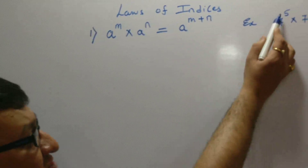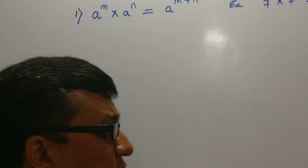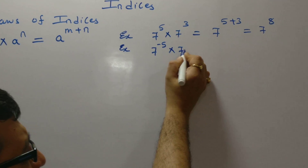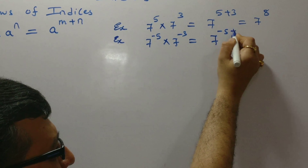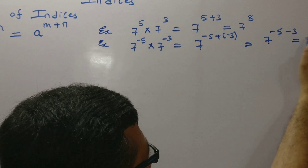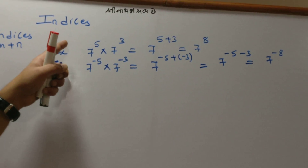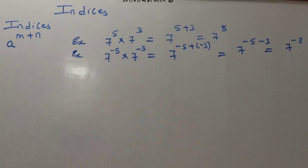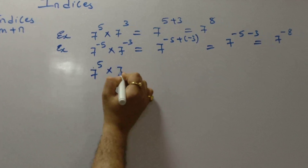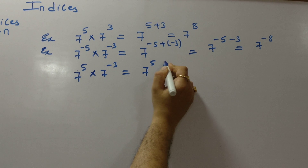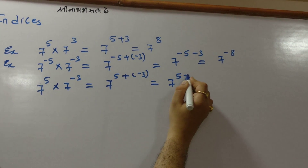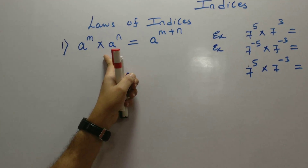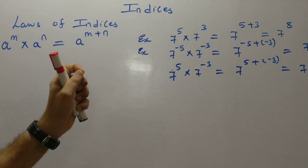The question arises: should we always have positive powers? No, not necessary. The powers can be negative as well. Example 2: 7 raised to minus 5 into 7 raised to minus 3. Answer shall be 7 raised to minus 5 plus minus 3, which is 7 raised to minus 8. We can also have 1 positive and 1 negative: 7 raised to 5 into 7 raised to minus 3 gives 7 raised to 5 minus 3, which is 7 raised to 2. This law is applicable for all kinds of powers.